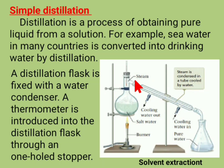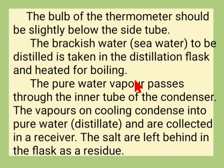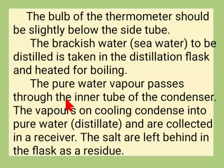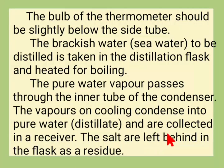Salt water is taken in a distillation flask, which is closed with a one-hole rubber stopper. The bulb of the thermometer is placed slightly below the side tube. The sea water is heated to boiling. Pure water vapor passes through the inner tube of the condenser; on cooling, pure water is collected in the receiver, and the salt is left behind in the flask.